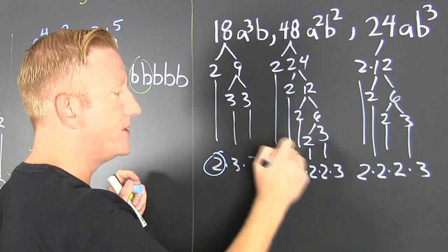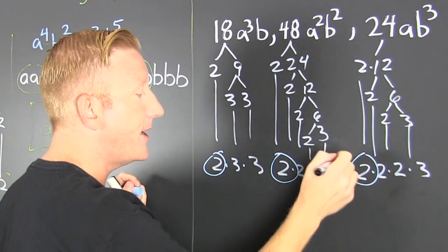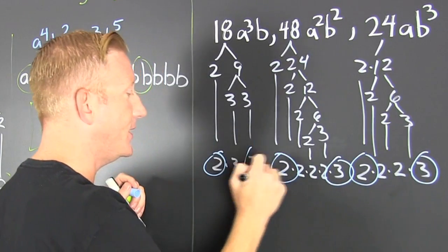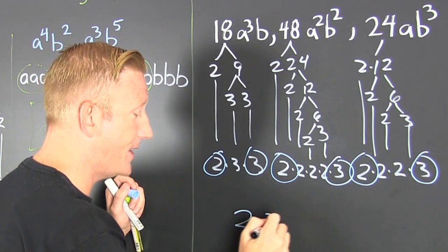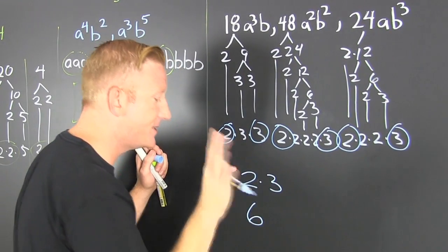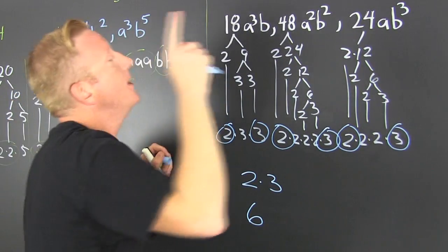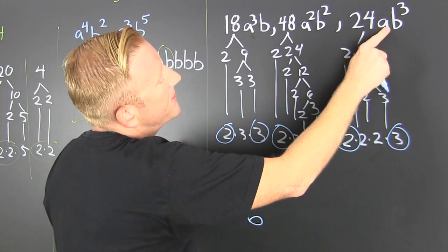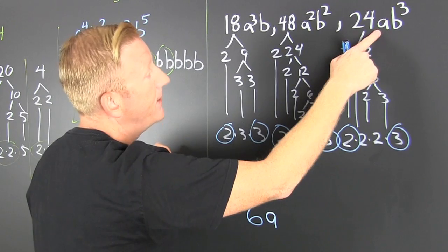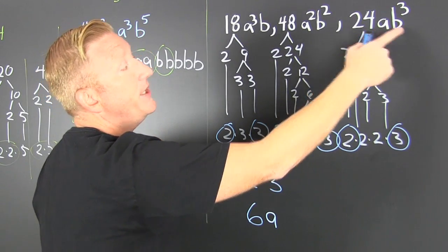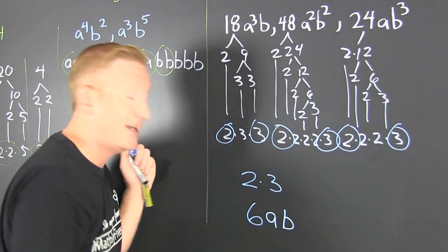Now we see what's in common. They all have at least one two and one three — that's all they have in common, so the GCF is 2 times 3, which is 6. Using the shortcut, the least number of a's is one, and the least number of b's is one b, giving us a greatest common factor.